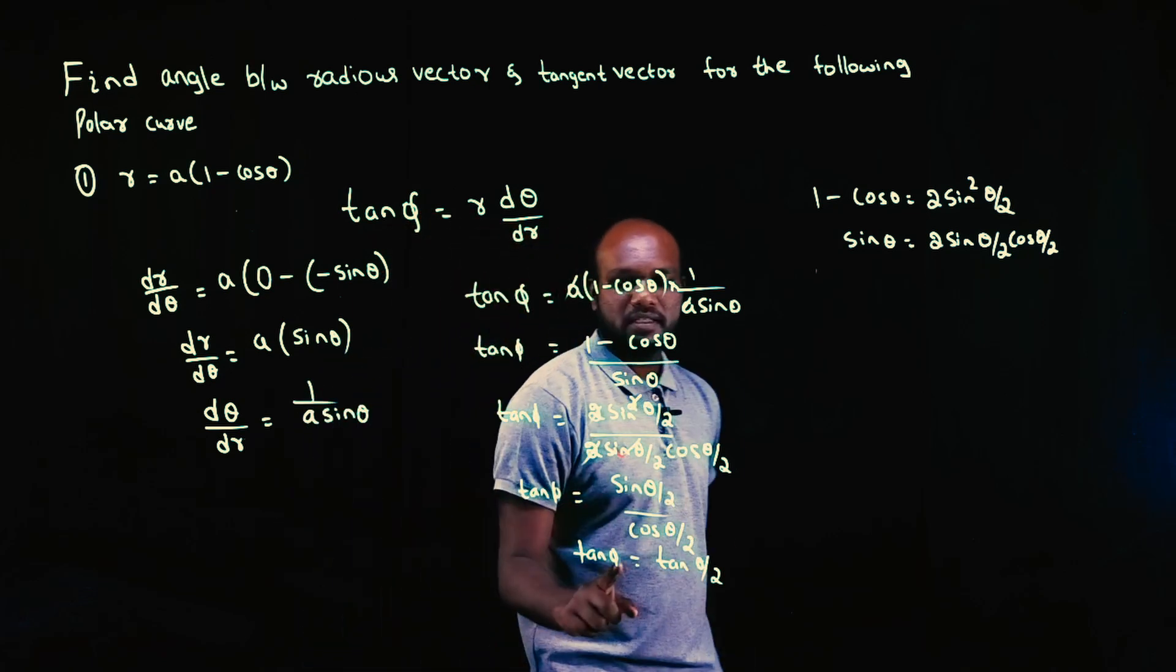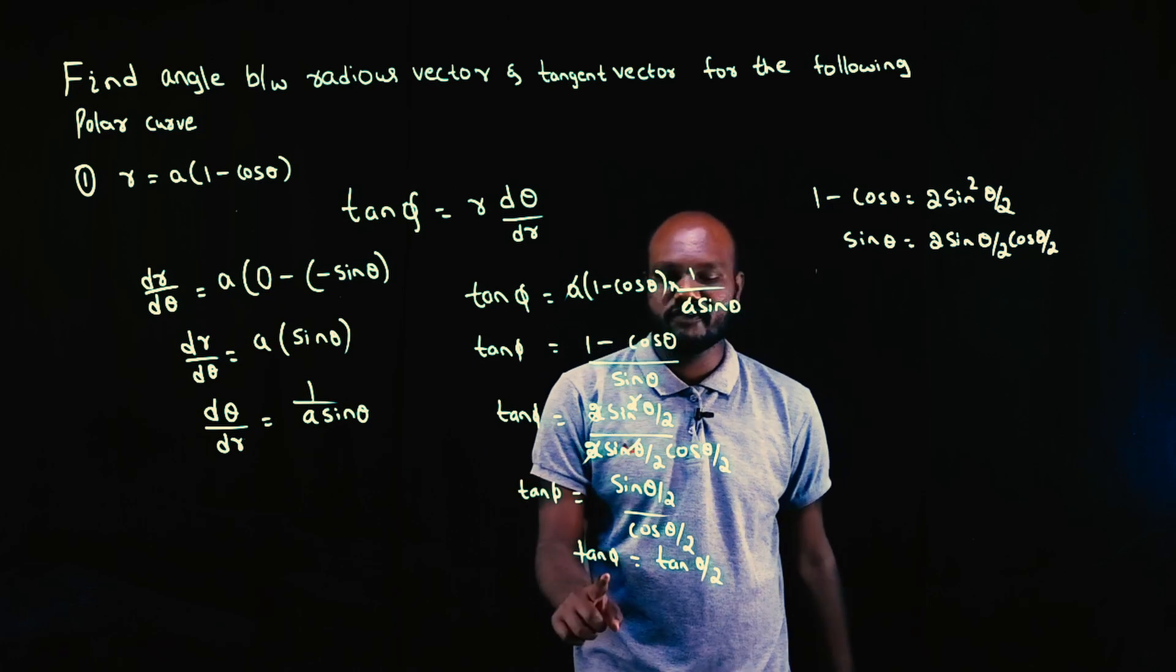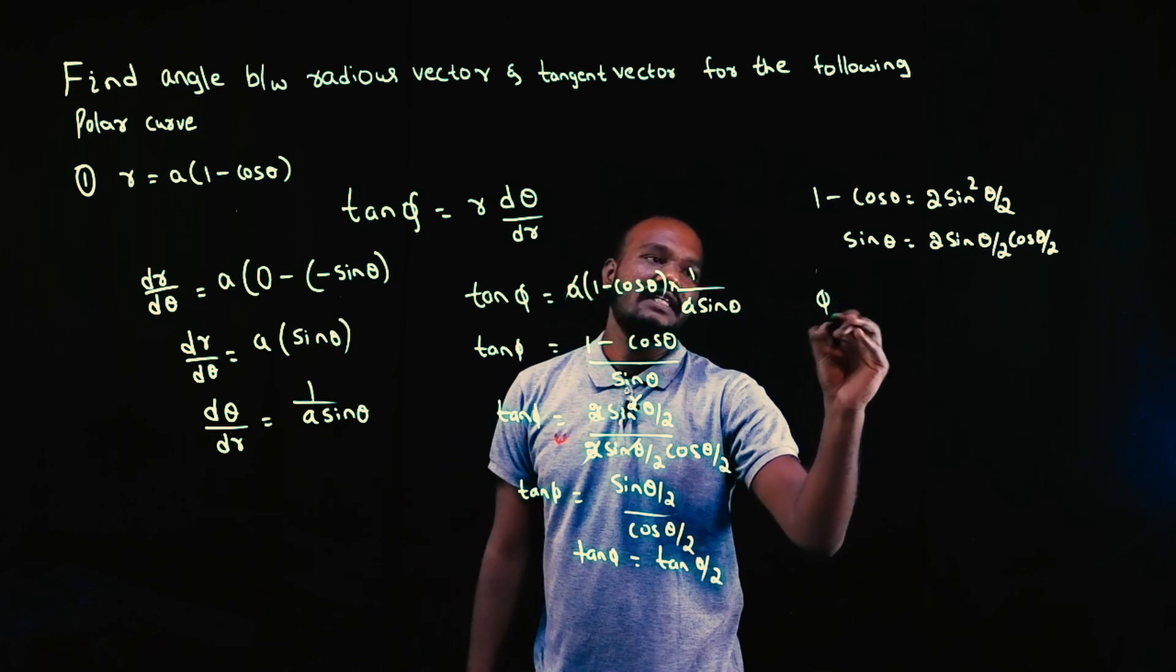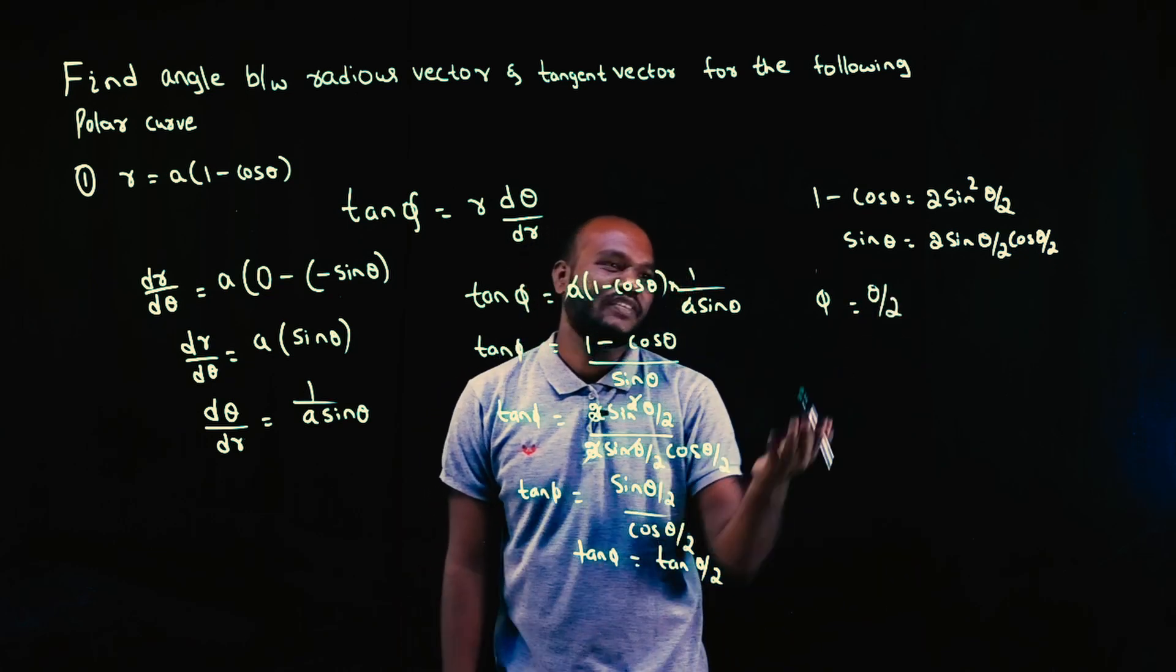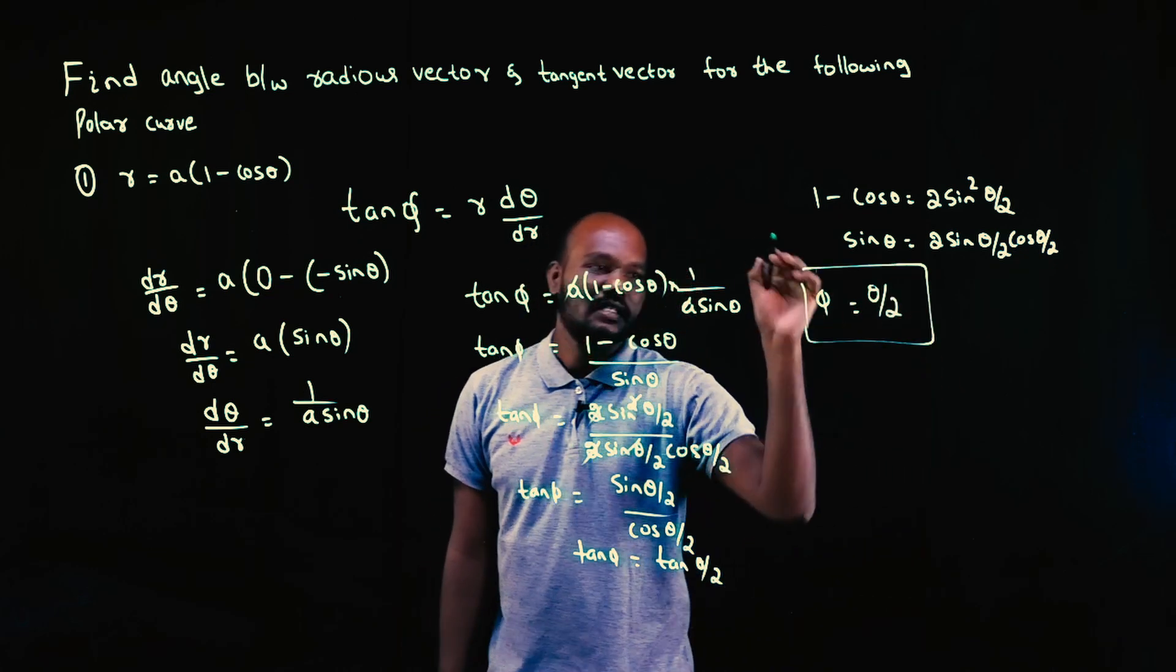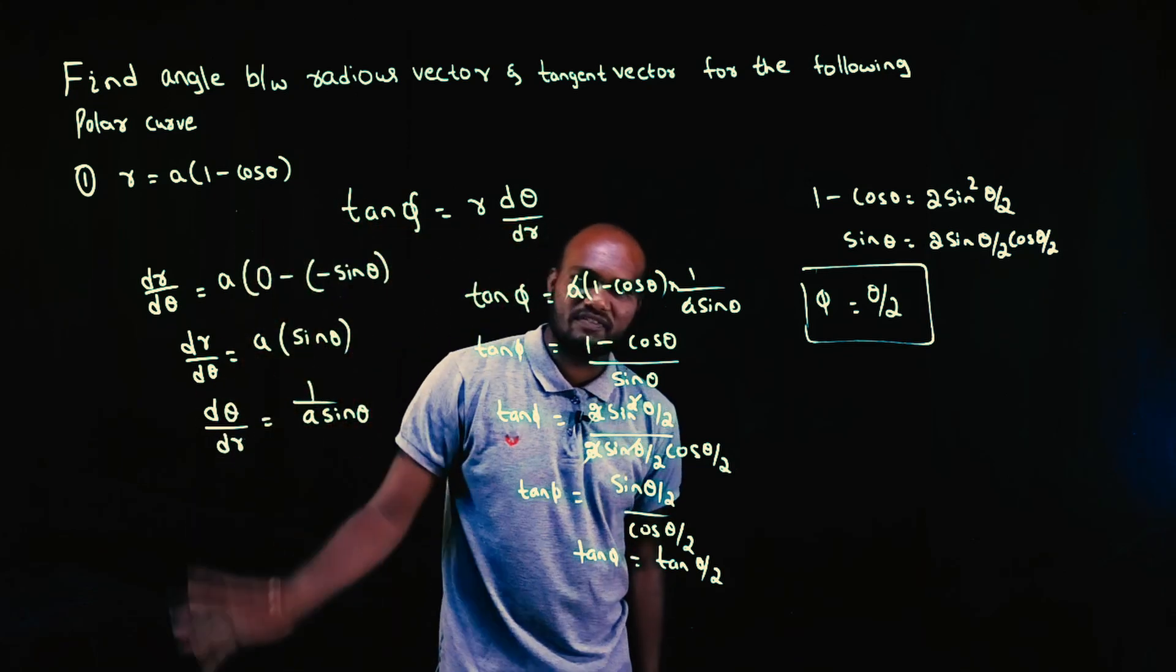Tan φ is equal to tan θ/2. But if you just take inverse trigonometry, φ is equal to θ/2. So this lies in the first quadrant. So φ is equal to θ/2. Simple. The first question is pretty simple. If you know the formula, everything is self-explanatory.